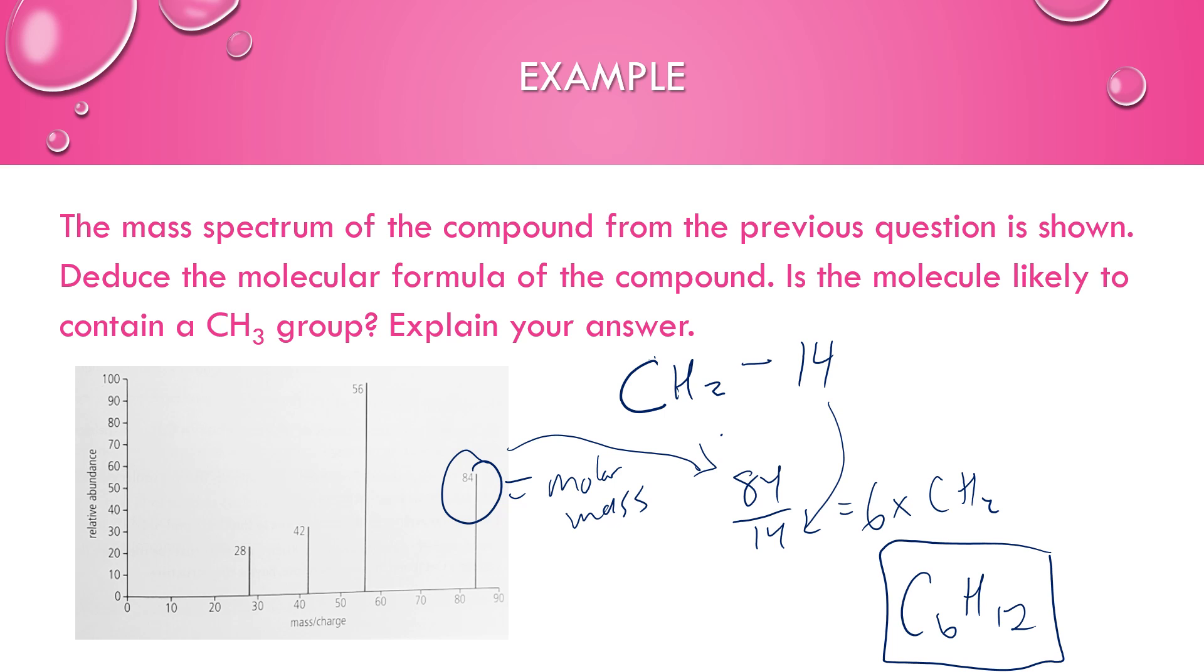Then it says, is the molecule likely to contain a CH3 group? Explain your answer. This is a great chance to use your data booklet. If you go to section 22 in your data booklet, it has some sample mass spectra fragments. And one of those is CH3. And a CH3 group has a mass of 15. Well, there's no 15 peak on here. It's missing. So we'd say, no, the molecule is not likely to contain a CH3 group because there is no peak at 15 on our mass spectrum.